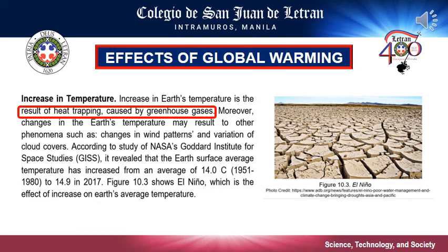Next, increase in temperature. One of the most immediate and obvious effects of global warming is the increase in temperature around the world. The gradual heating of Earth's surface, oceans, and atmosphere is caused by human activity, primarily the burning of fossil fuels that pump carbon dioxide, methane, and other greenhouse gases into the atmosphere. As you can see on the figure, it shows the effect of increase on Earth's average temperature.